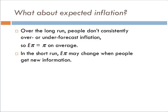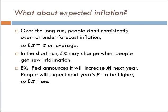In the short run, expected inflation may change when people get new information. So example, the Fed announces it will increase M next year. People expect next year's price level to be higher, so expected inflation rises. Why? Because we know that if M goes up, what happens? Price goes up in accordance. And so we expect an increase in inflation.